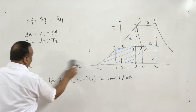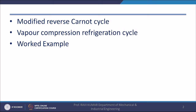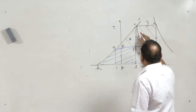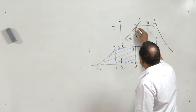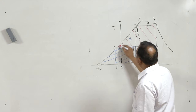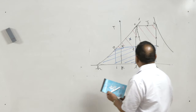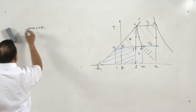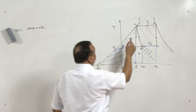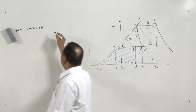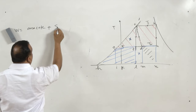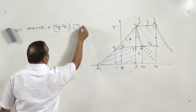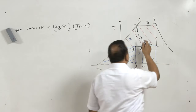Regarding the work by the compressor: the area of this diagram will give the work of the compressor. This diagram constitutes a rectangle and an area we have already calculated. So this is area C-E-F-C, which we have already calculated, plus the area of the rectangle, which equals (S_G1 minus S_F1) multiplied by (T1 minus T2).